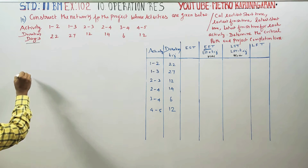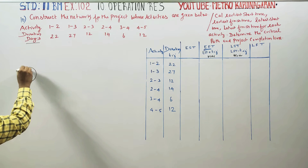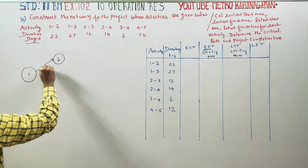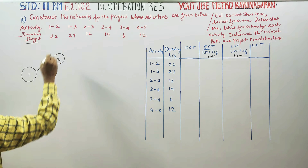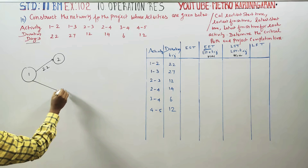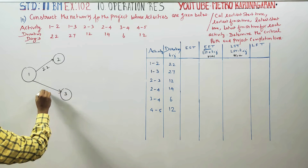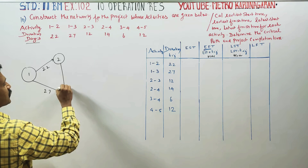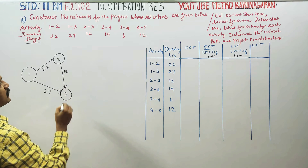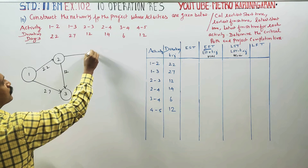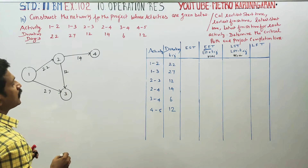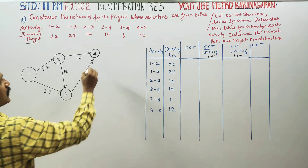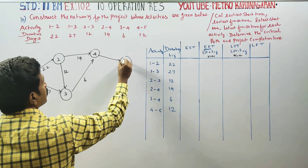Duration of days: the first network activity 1 to 2 is 22 days. Activity 1 to 3 is 27 days. Activity 2 to 3 is 12 days. Activity 2 to 4 is 14 days. Activity 3 to 4 is 6 days. Activity 4 to 5 is 12 days. The network is now complete and we can fill up here.